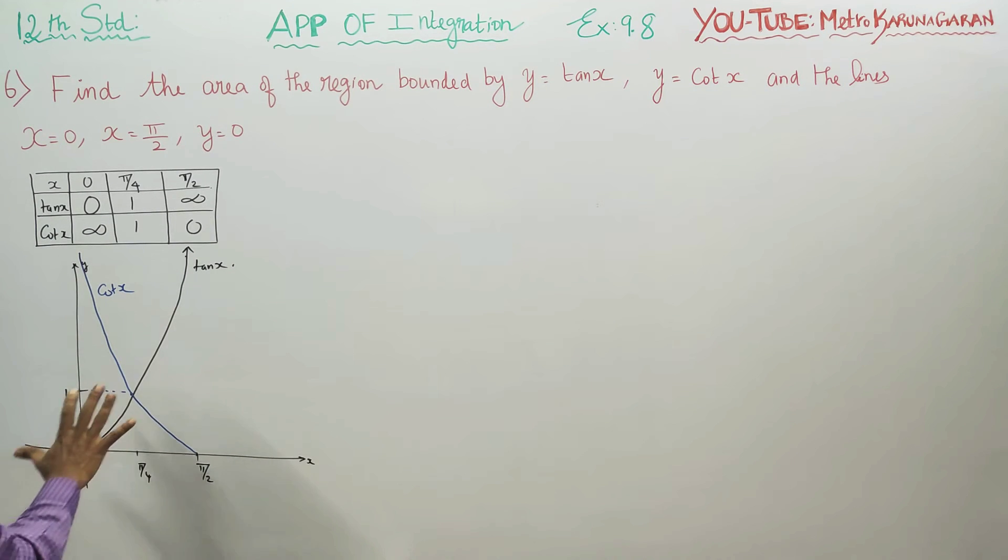Now I'm going to find the area. This is my A1 and this is my A2. A1 in the diagram is the dotted area under the tan x curve.